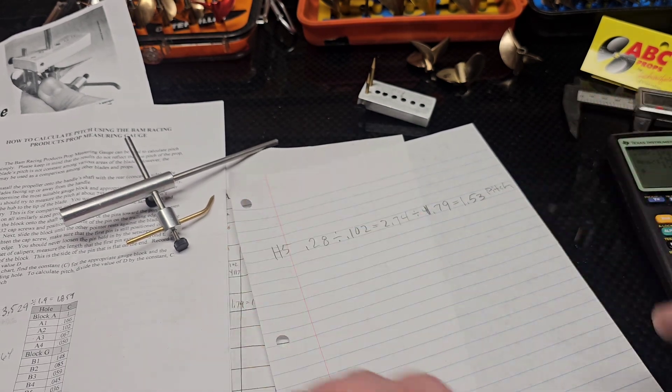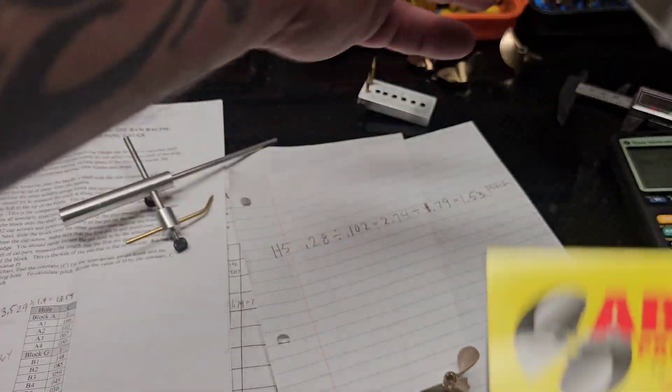So 1.79, divide 2.74 by 1.79, so divided by 1.79 equals a 1.53 pitch. Equals a 1.53 pitch. So that's the pitch that we're used to looking at.